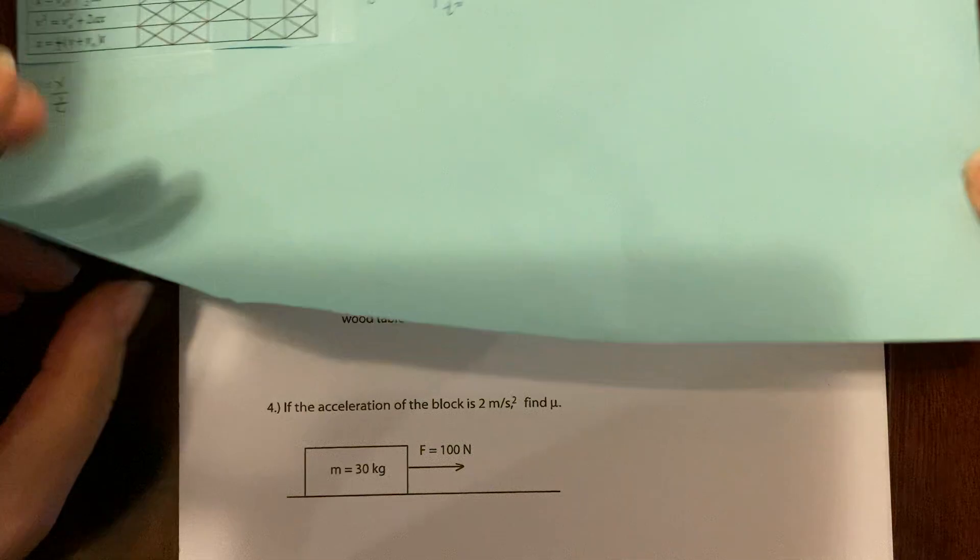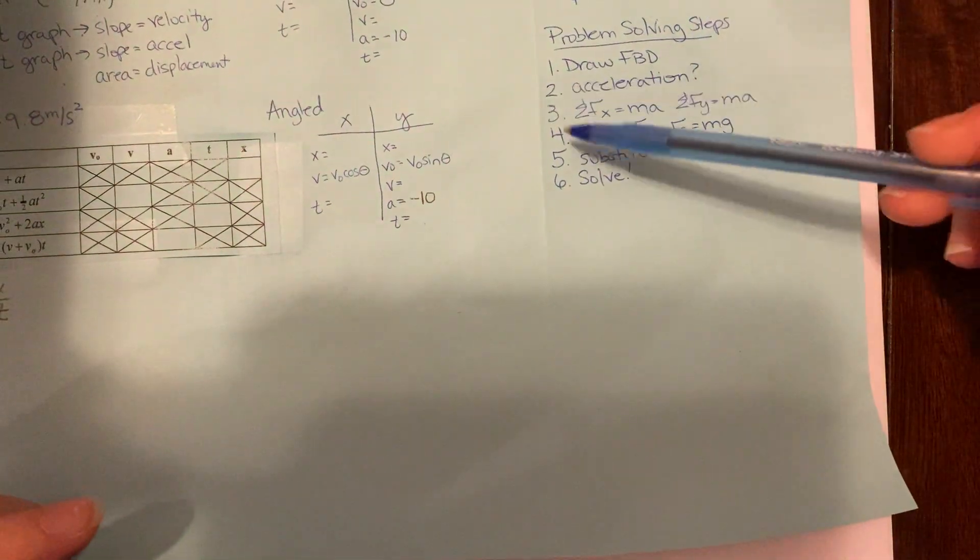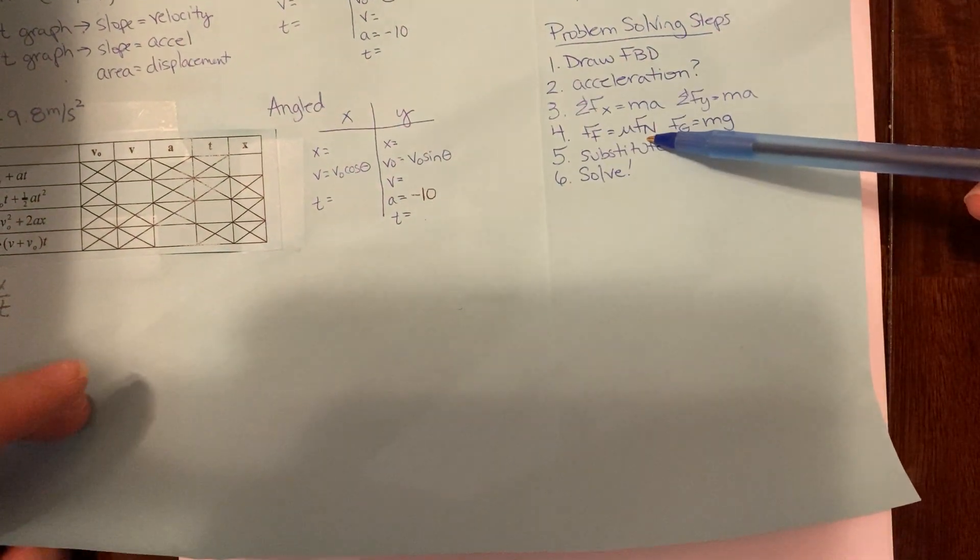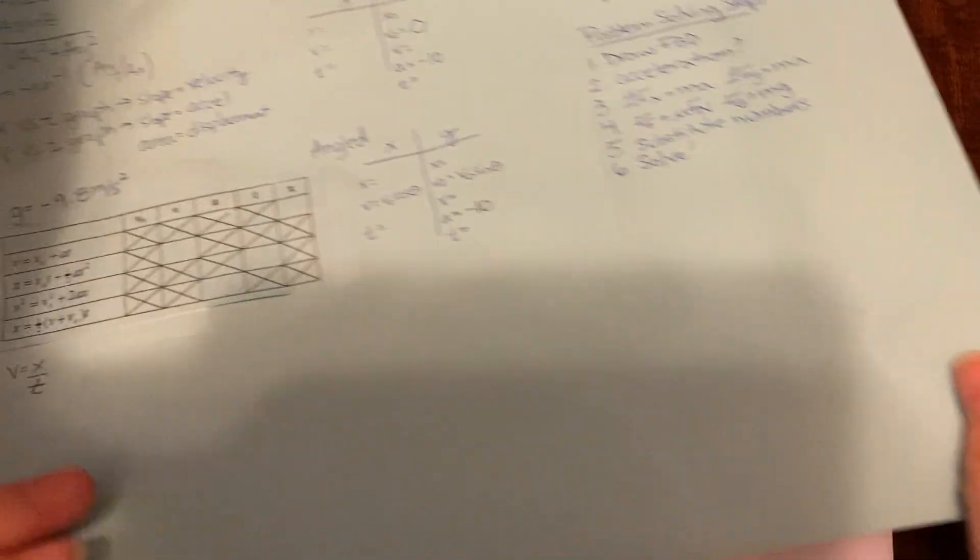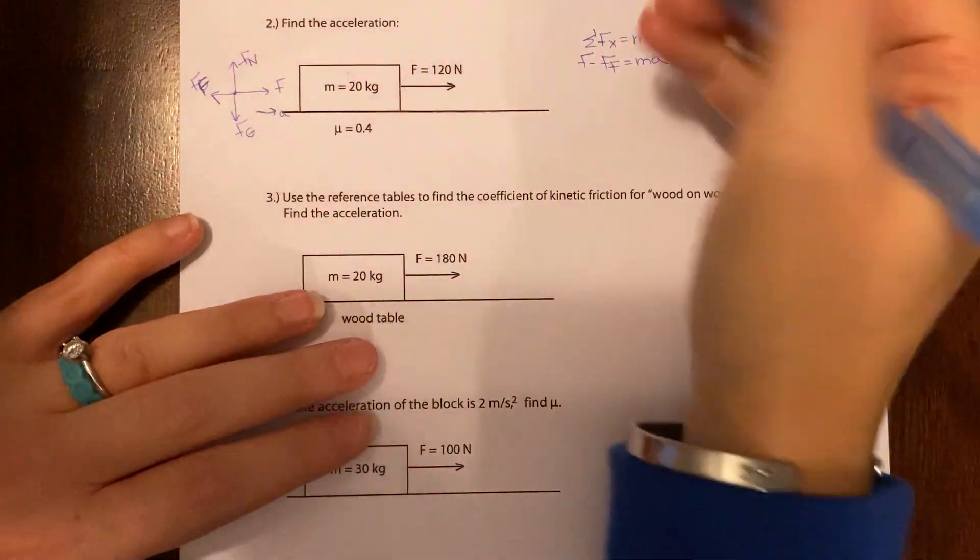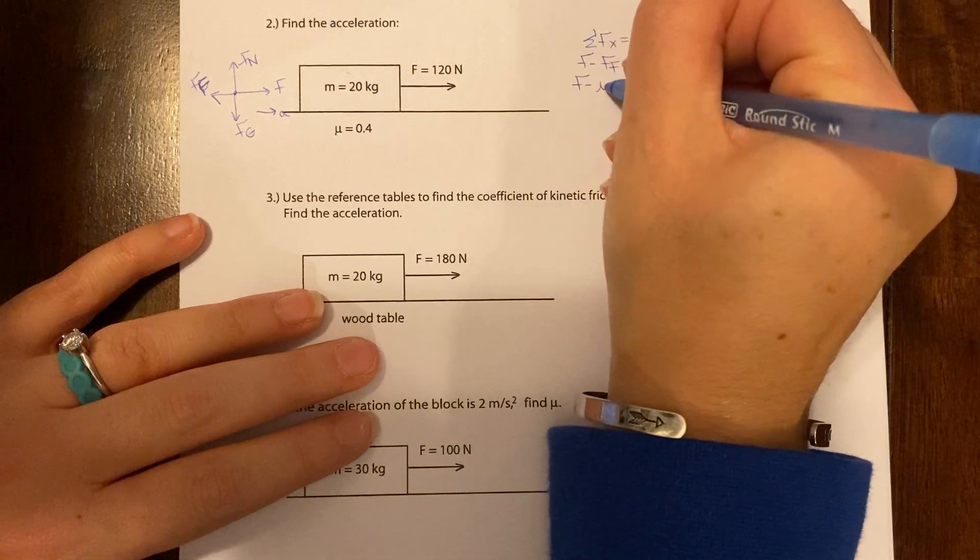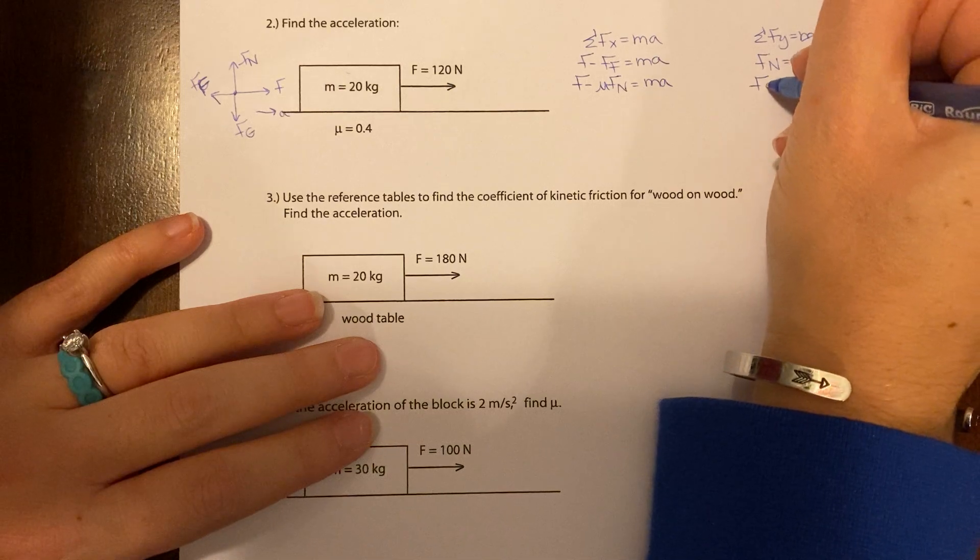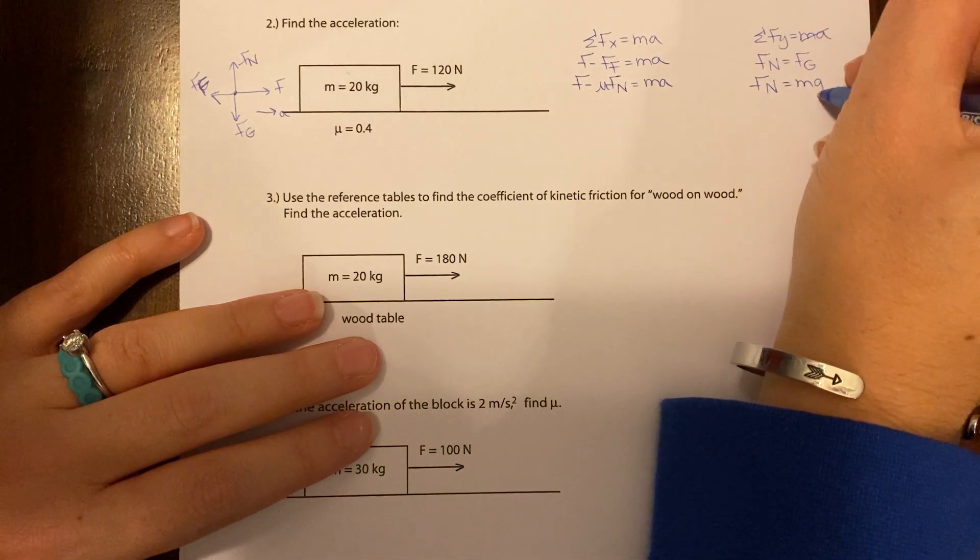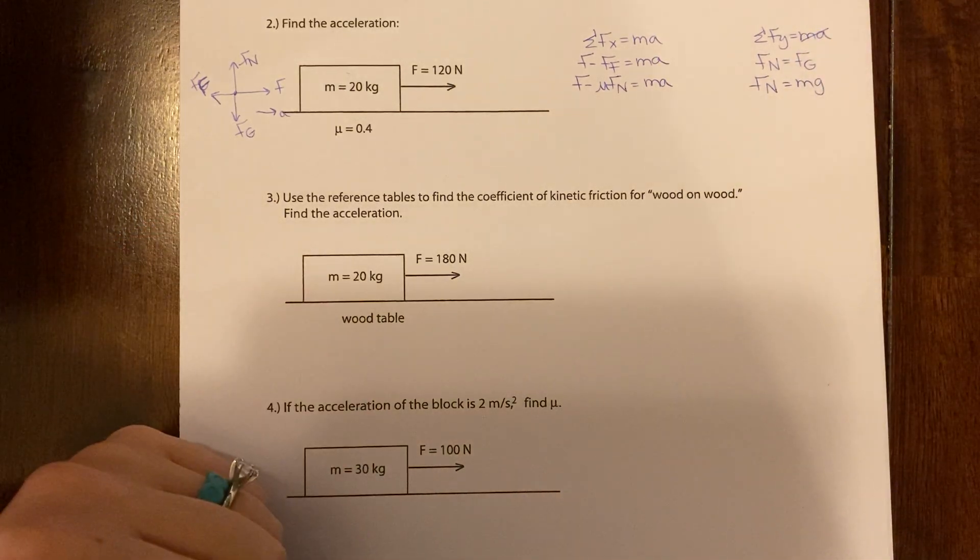All right, we're on to step four. Step four says everywhere you see ff, plug in mu fn. Everywhere you see fg, plug in mg. f minus mu fn equals ma and fn equals mg. Got it.